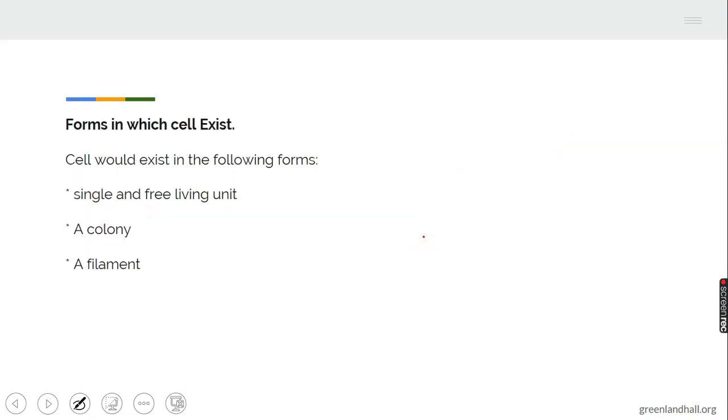Cell will exist in various forms. Among the forms in which cell exists, we have single and free living units, a colony, and a filament.